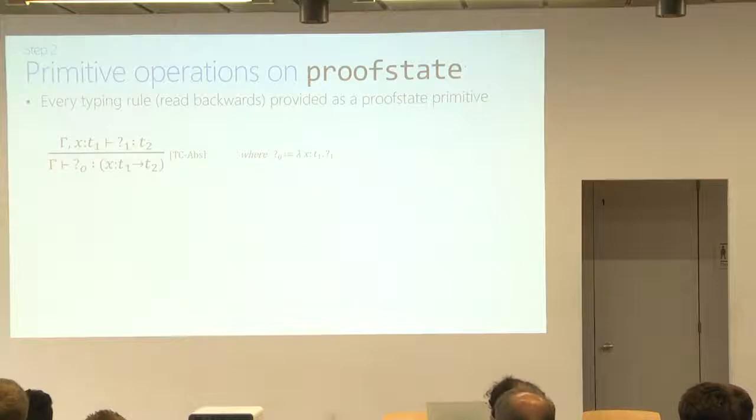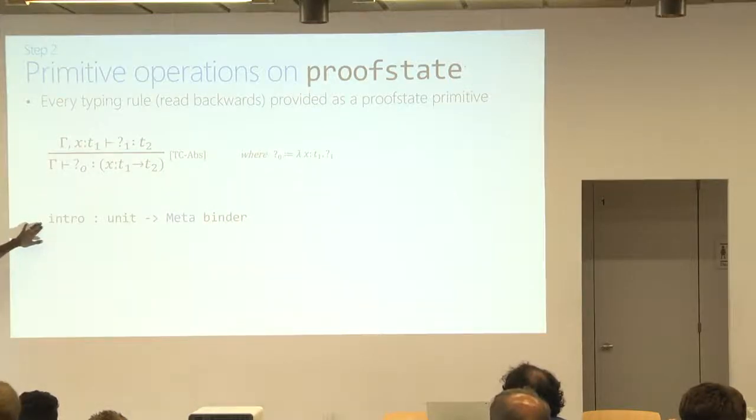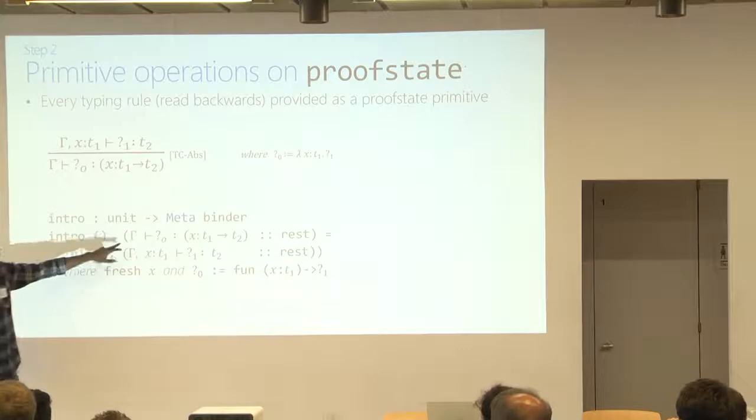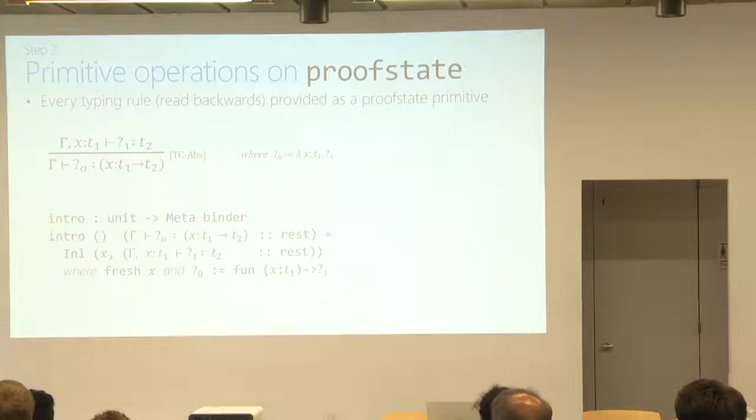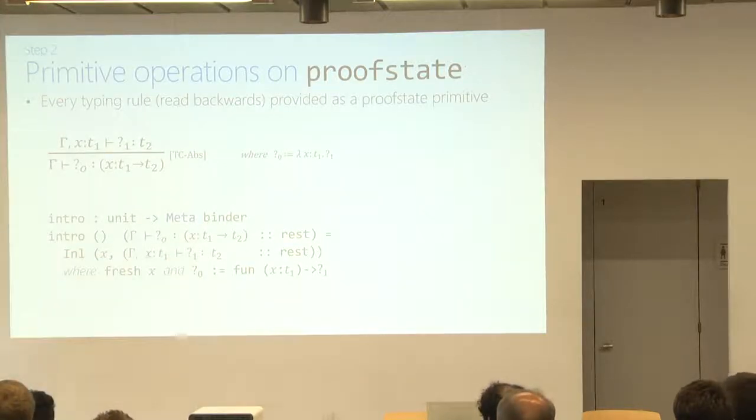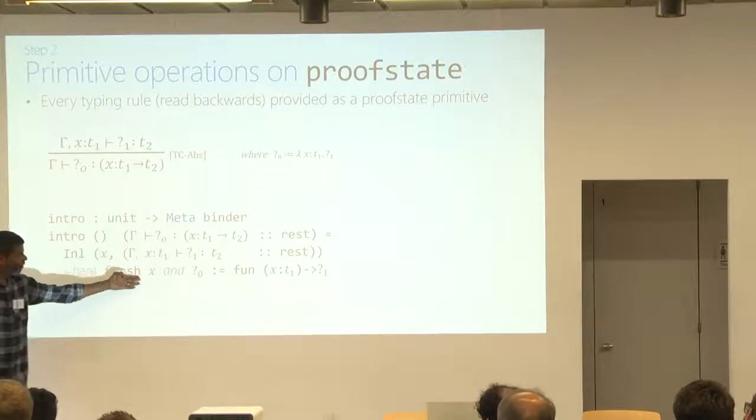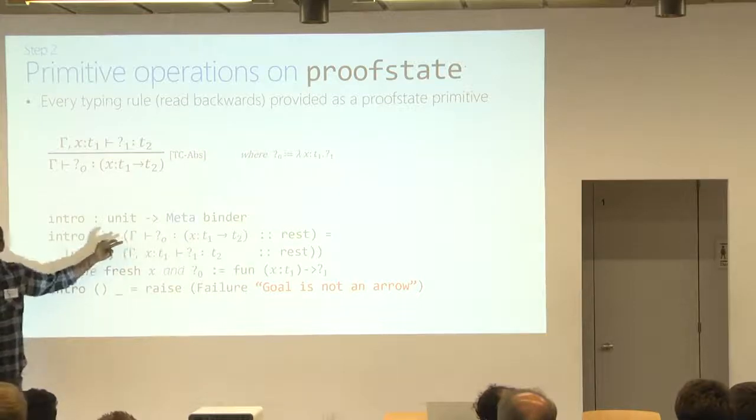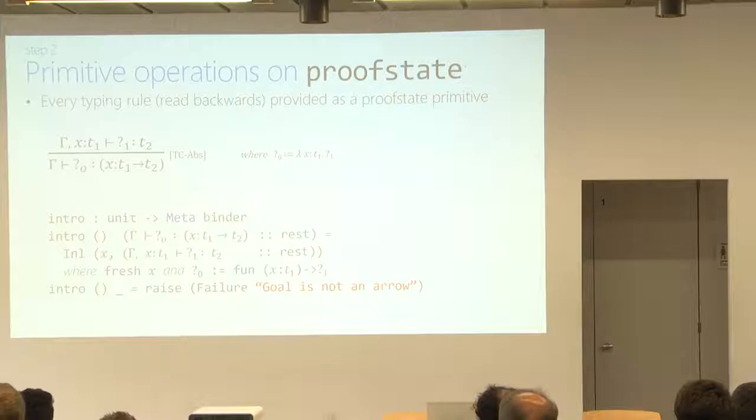So, take here, this is the typing rule for typing abstractions. That should be a familiar rule. Now, if you want to turn this into a meta program primitive, there's a primitive called intro to introduce a binder into a context. The way you can see that is by reading the abstraction rule backwards. It's a meta program with that signature. And the way it works is that if you, abstractly, if you see, the way I see it is that, if you apply intro to a proof state whose head goal is an arrow, you can transform it successfully into a proof state whose head goal is the body of the function with the binder in context. And internally, you generate a fresh name and you set the previous meta variable to the partially completed lambda. And if you try to apply intro to any other proof state where the head is, for instance, not an arrow, intro fails. And you can handle the failure. You can catch the failure and try some other tactic if you like.